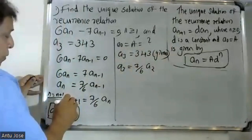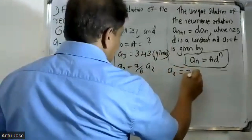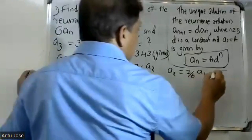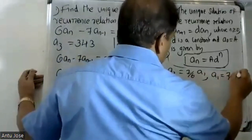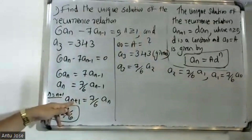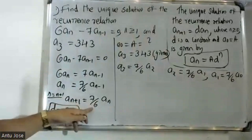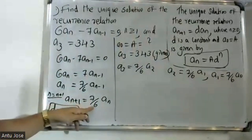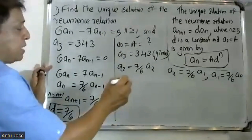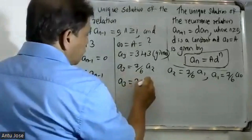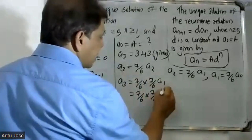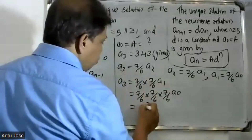So a1 is equal to 7 by 6 times a0, and a1 equals 7 by 6 times a0. Then a3 equals 7 by 6 times a2, and like this a2 equals 7 by 6 raised — that is 7 cube over 6 cube.